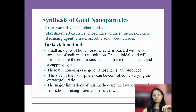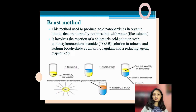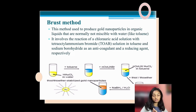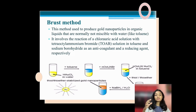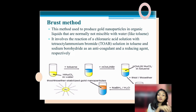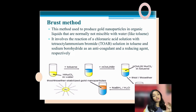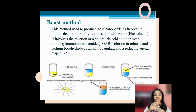The Brust method is used to produce gold nanoparticles in organic liquids that are not miscible with water — for example, toluene, a clear and colorless liquid that becomes vapor when exposed to air. This method involves the reaction of chloroauric acid with tetraoctylammonium bromide (TOAB) solution in toluene, and sodium borohydride as a reducing agent respectively.